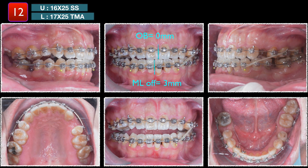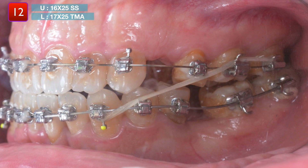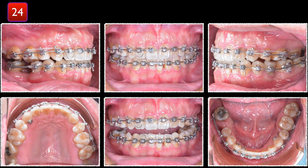At 12 months, the open bite had been improved. However, the midline deviation became more obvious. As a result, we used a unilateral cross-elastic to increase the overbite and improve the midline deviation. By the 21st month, all the major problems had been resolved, so we decided to prepare for the implantation procedure.